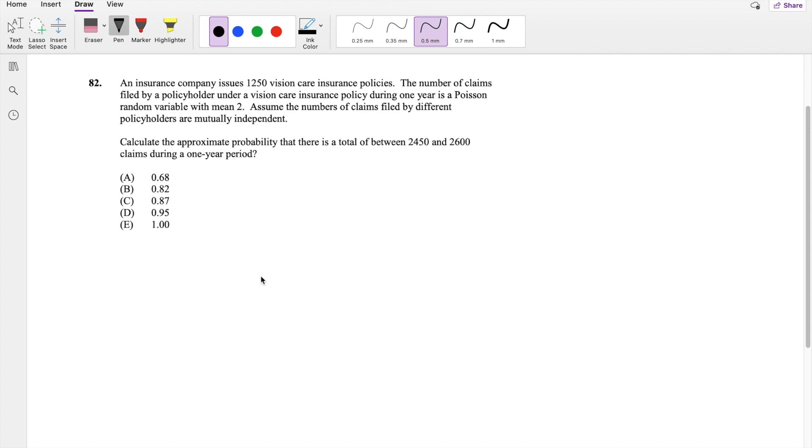Okay, assuming you've attempted, let's just dive right in. So they issued 1250 insurance policies and the number of claims filed by a policyholder under Vision Care in one year is Poisson distributed with mean equal to 2. So the value of lambda, where lambda is 1, is equal to 2.